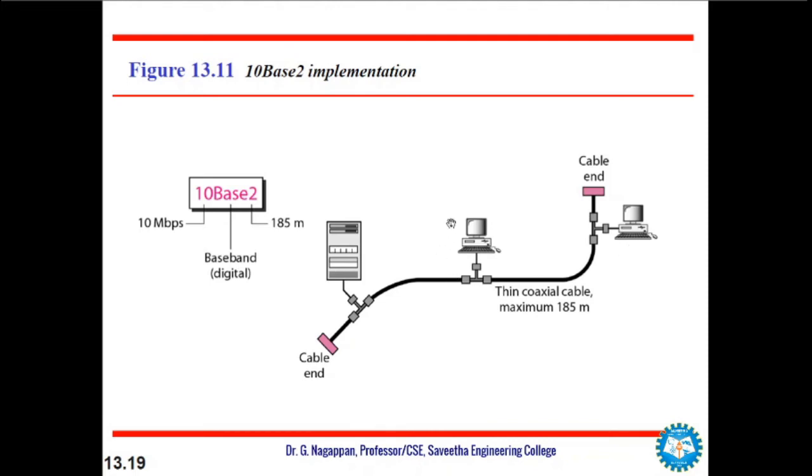This implementation is more cost effective than 10Base5 thick Ethernet, because thin coaxial cable is less expensive than thick coaxial cable, and the T connections are much cheaper than the taps being used. Installation is simple because the thin coaxial cable is very flexible. The length cannot be more than 185, closer to 200, due to high level of attenuation in thin coaxial cables.